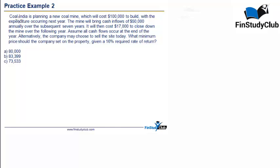Let's start reading the question. It starts with Coal India which is planning a new coal mine which will cost $100,000 to be built with the expenditure occurring next year. The mine will bring cash inflows of $50,000 annually over the subsequent 7 years. It will then cost $17,000 to close down the mine over the following year. Assume all cash flows occur at the end of the year which is like the basic assumption all the time.